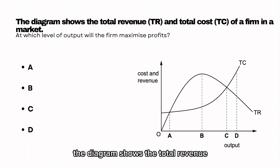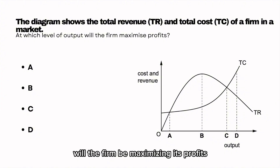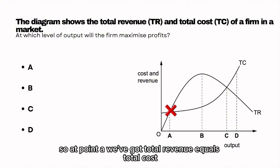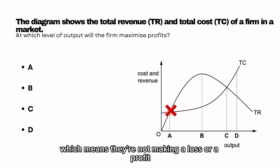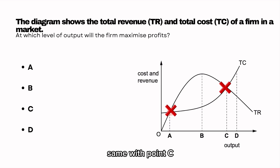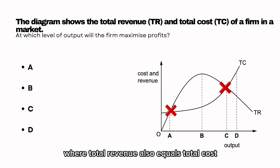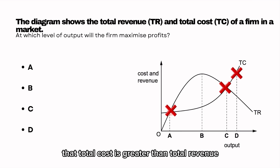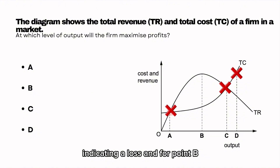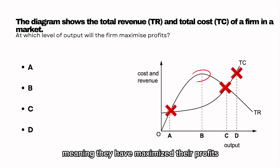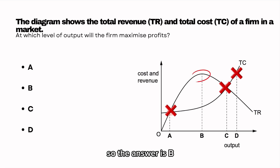The diagram shows the total revenue and total cost of a firm in the market. At which level of output will the firm be maximizing its profits? At point A, total revenue equals total cost — no loss or profit. Same with point C, where total revenue also equals total cost. At point D, total cost is greater than total revenue, indicating a loss. At point B, total revenues exceed total cost, meaning profits are maximized. So the answer is B.